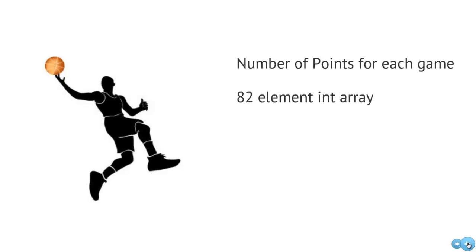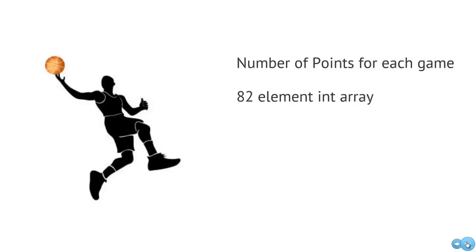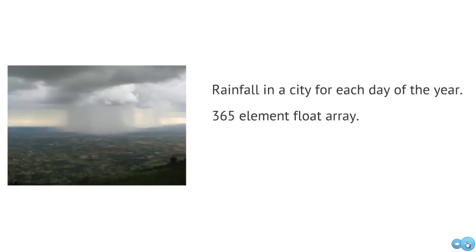For example, if we want to keep track of a basketball player's points scored for each game over an NBA season — 82 games — we'd create an 82-element integer array, since we don't have fractional points in basketball. Another example: if we want to track rainfall in a city for each day of the year, we'd create a float or double array with 365 elements, since rainfall can have a fractional part.